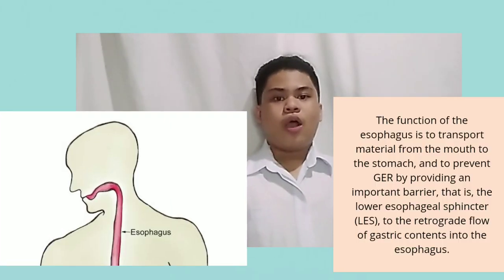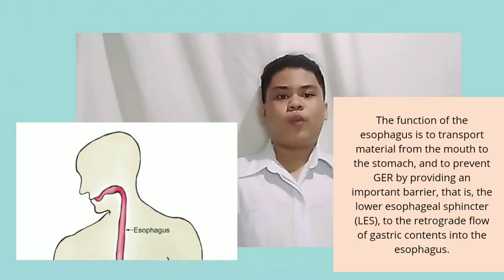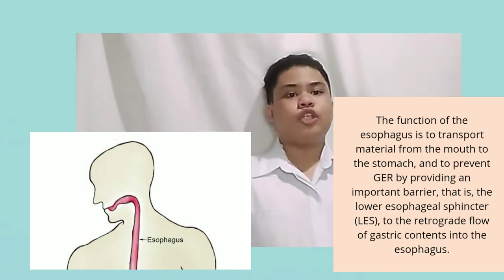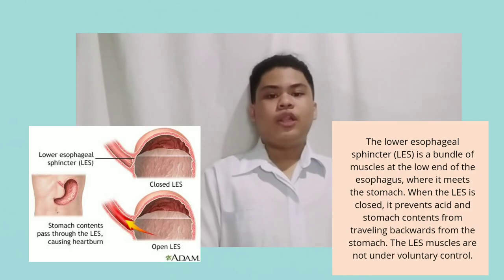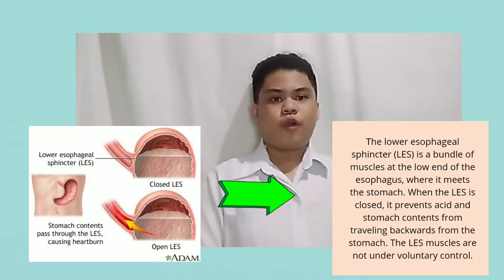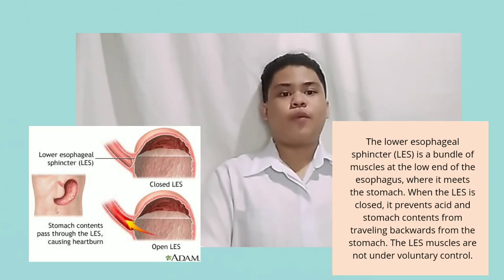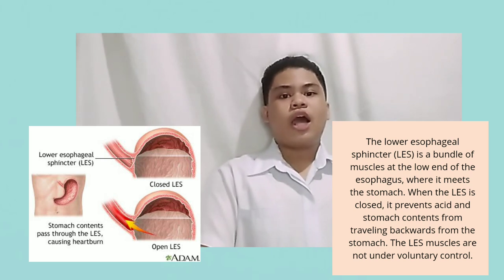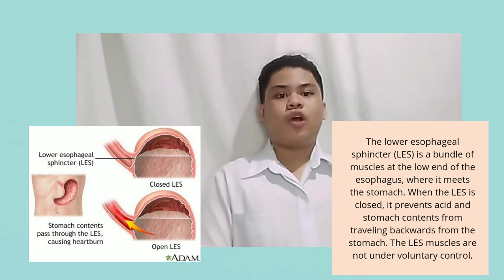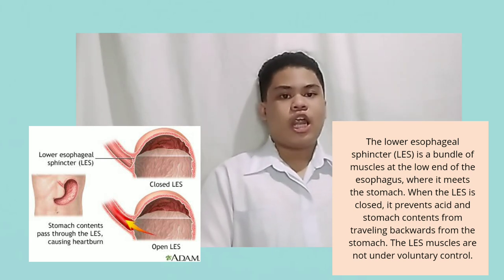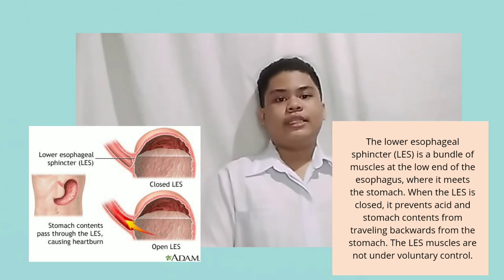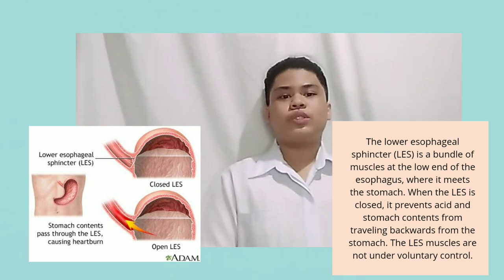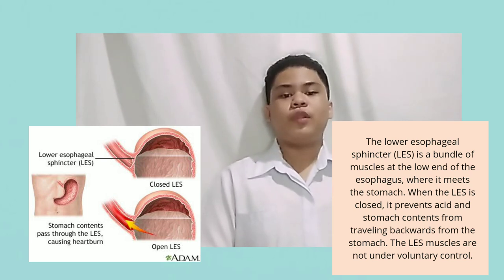The second part is the esophagus. Once you begin swallowing, the process becomes automatic — your brain signals the muscles of the esophagus and peristalsis begins. When food reaches the end of the esophagus, a ring-like muscle called the lower esophageal sphincter relaxes and lets food pass into your stomach. This sphincter usually stays closed to stop what's in your stomach from flowing back into your esophagus.